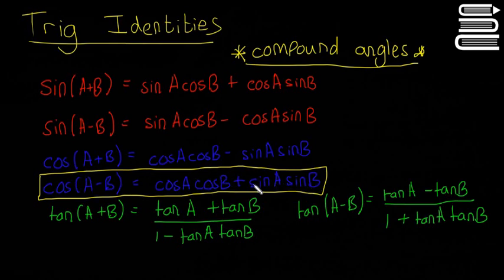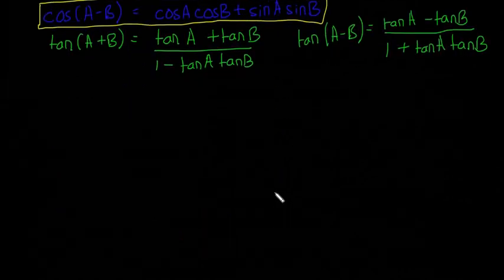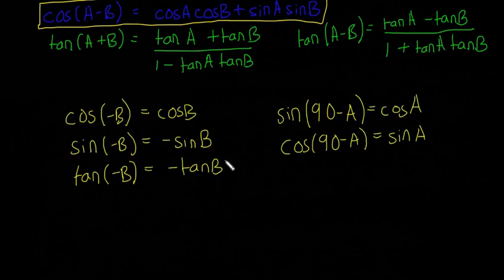You need to be able to start with cos of A minus B, and then from there you can prove each one individually using these few pieces of information there.